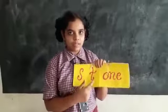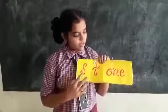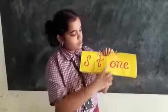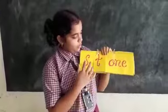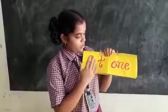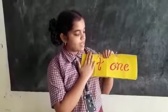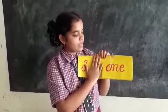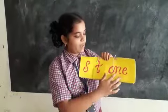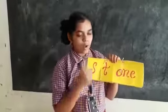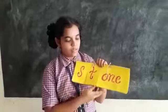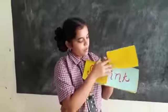From one word we can learn many words. See here: stone, totally stone. If we close S, we get tone. If we close T, we get one. So in one word we are forming three words.